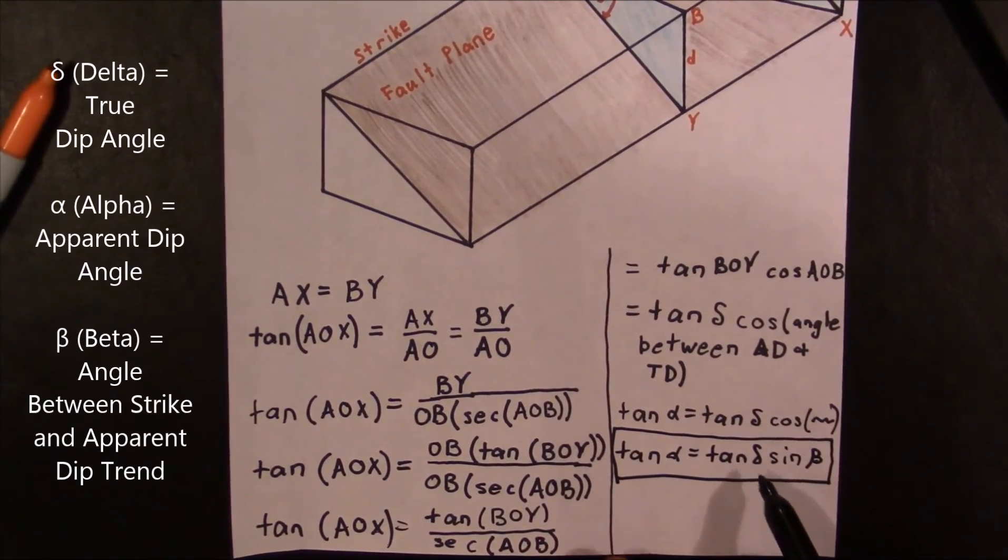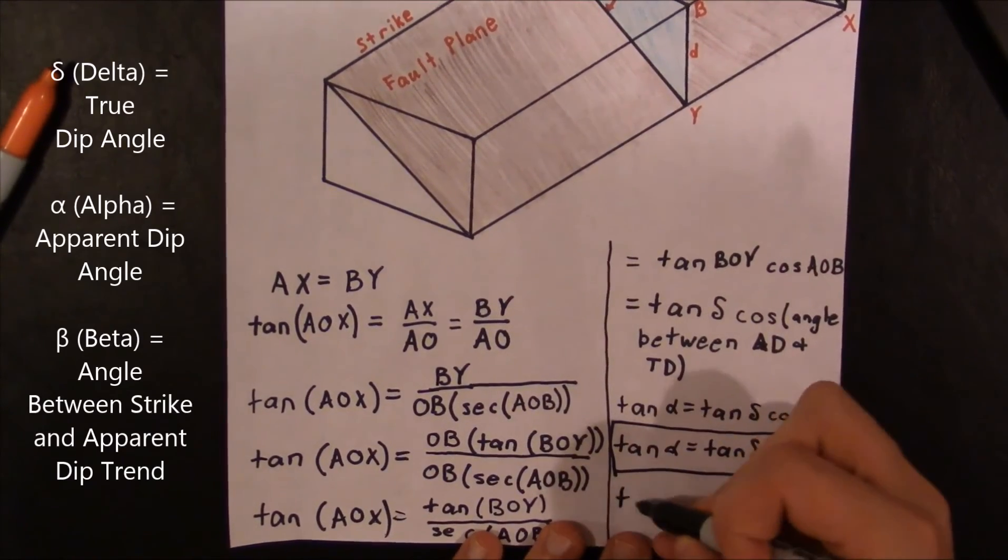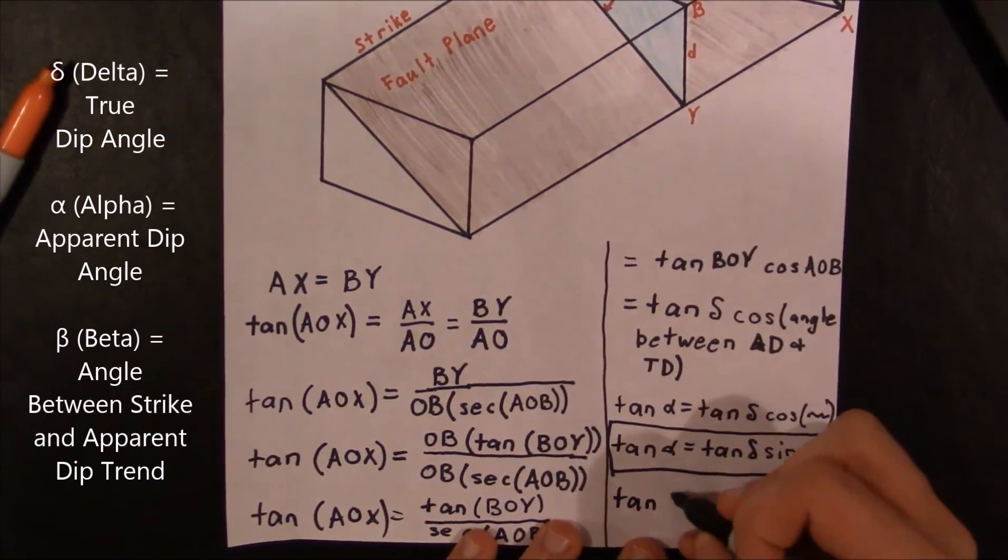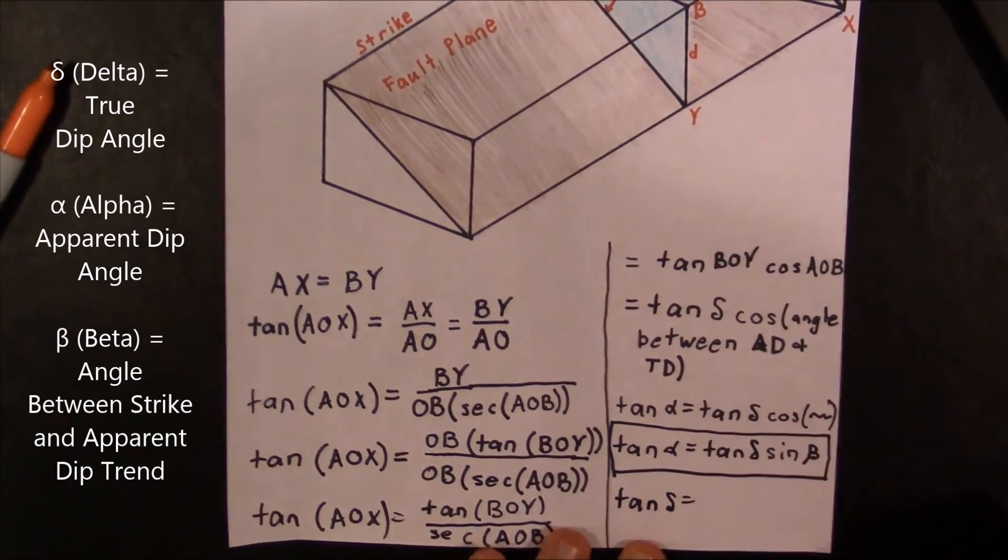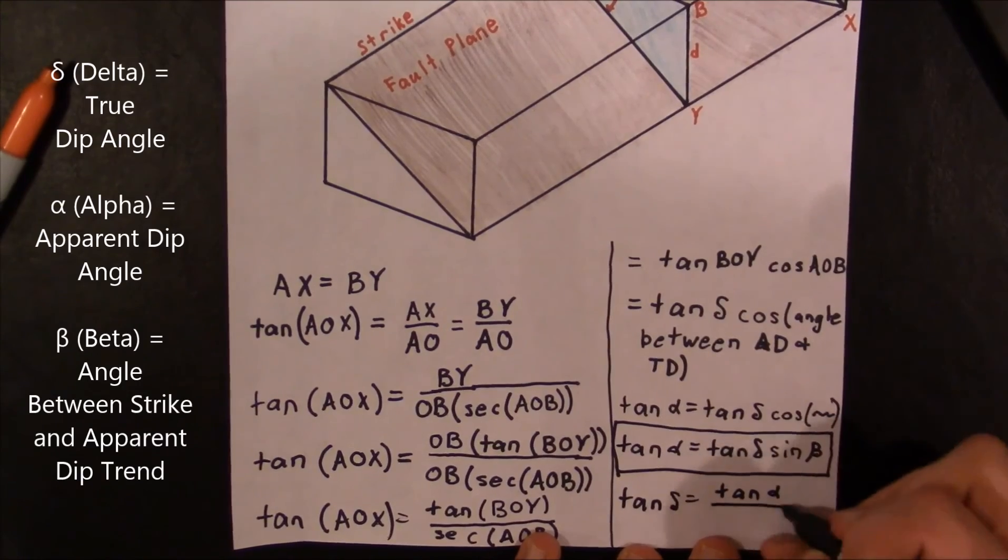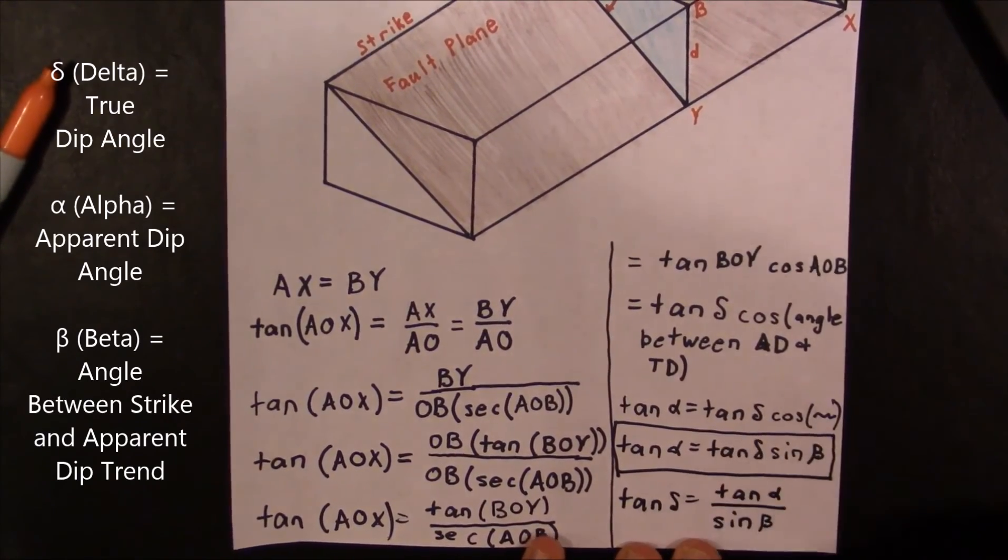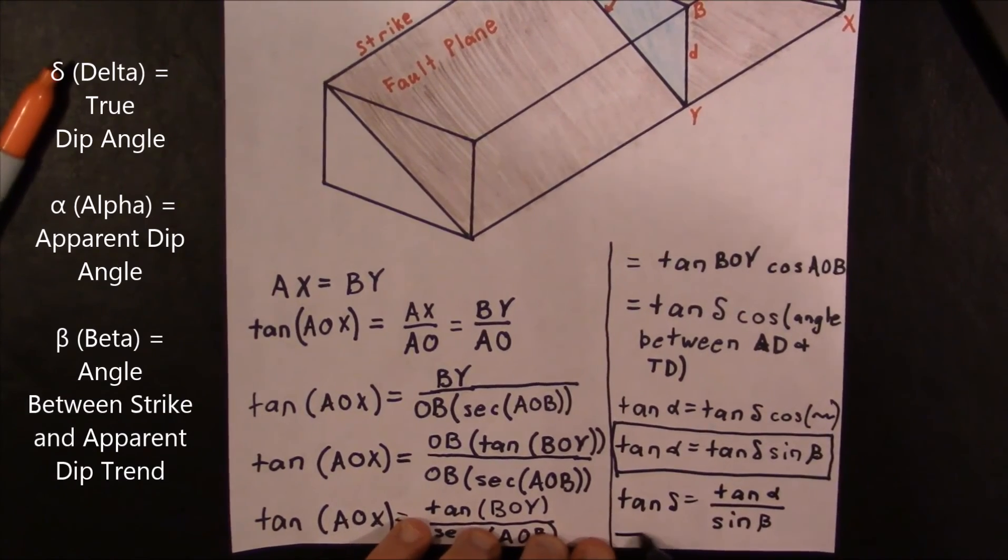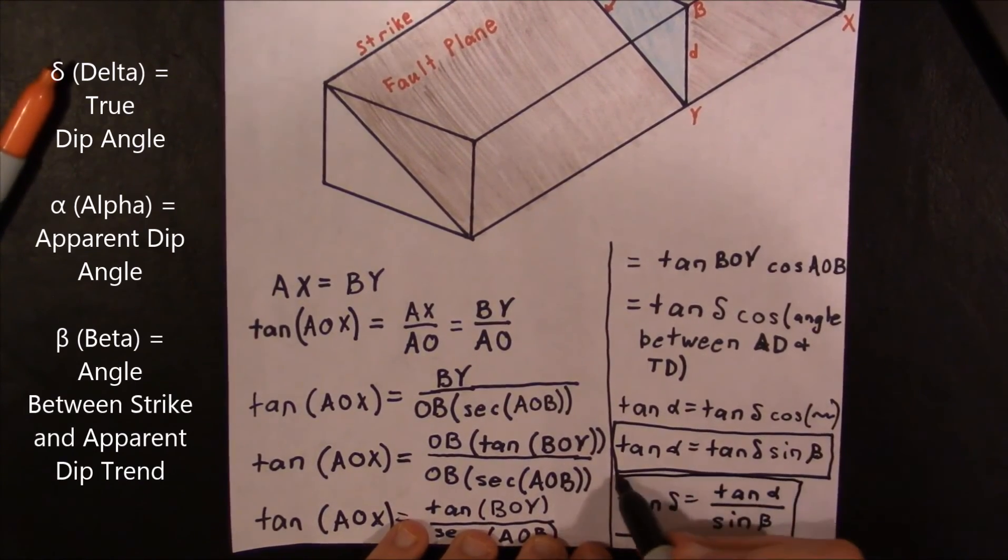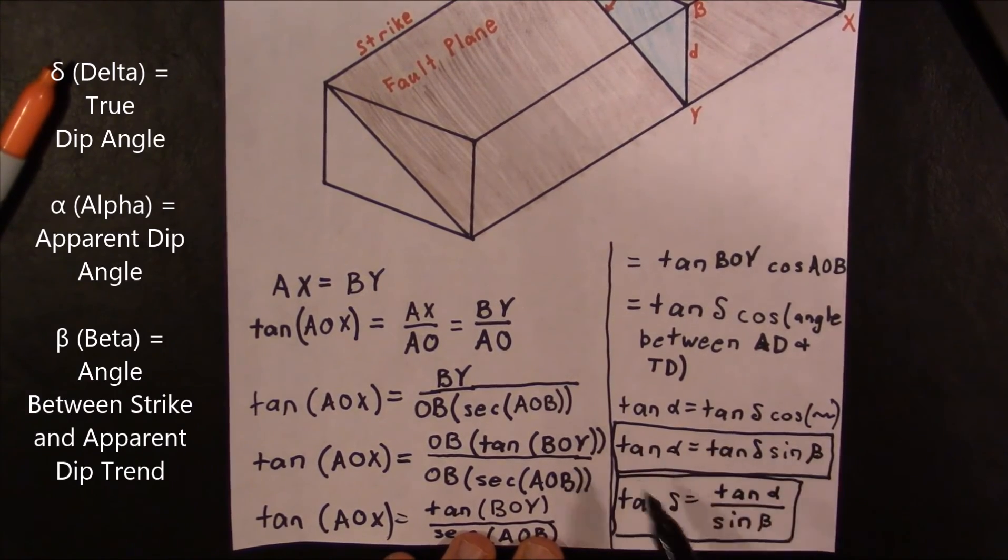This is how we would solve if we wanted to get the apparent dip. If we wanted to solve for the true dip, we could simply just move these things over. We could say that the tangent of delta equals the tangent of alpha over the sine of beta. This is also completely correct. So depending on what you're solving for, these would be the formulas that you could use.